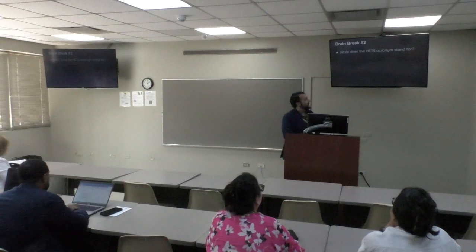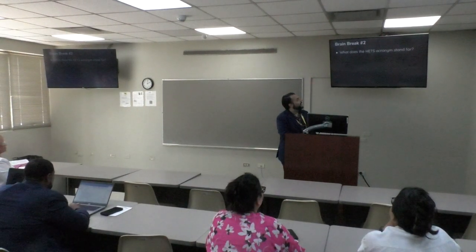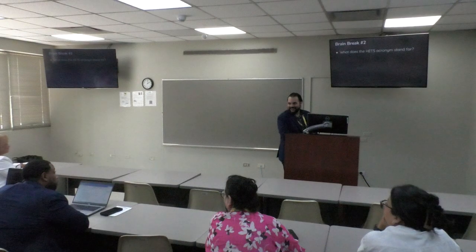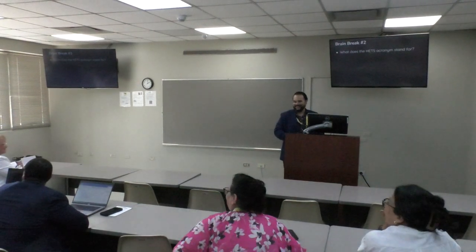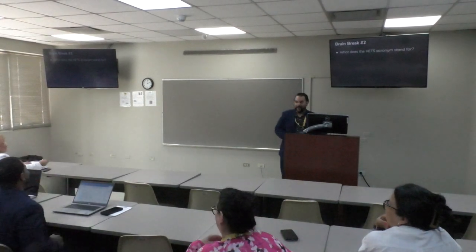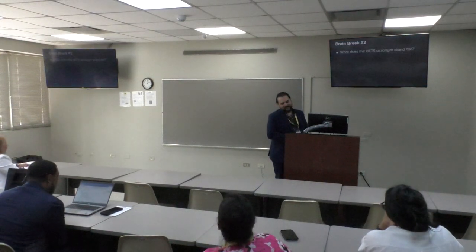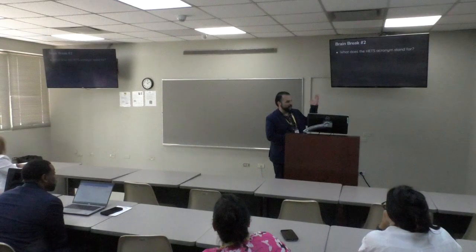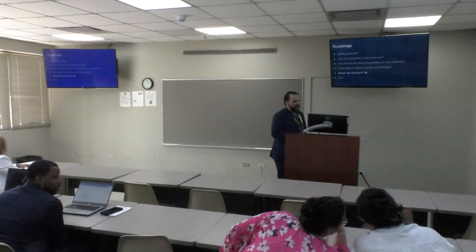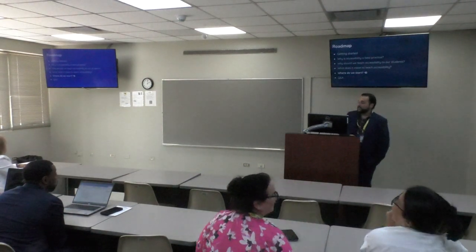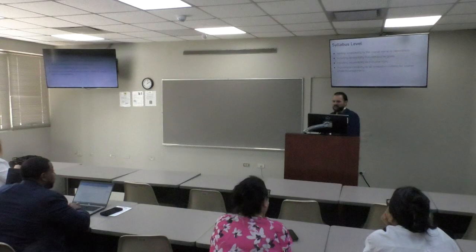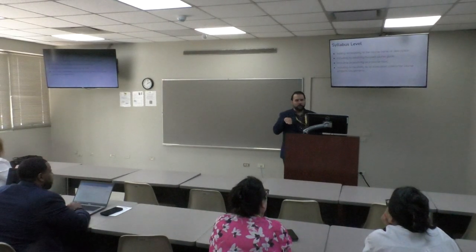Where do we start? Here are recommendations at the syllabus, course, program, and institutional levels. At the syllabus level: add accessibility to the course name or description, include accessibility-focused course goals, include accessibility as a course topic and general discussion item, and include accessibility as an evaluation criterion for course projects and assignments. A good way to teach students about accessibility is asking them to produce accessible assignments — for example, requiring that PowerPoint presentations be accessible.